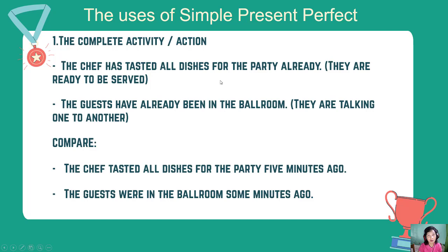Let's see the example: 'The chef has tasted all dishes for the party already.' 'Already' is the word that supports the meaning of the complete or finished activity. This sentence means that the action of tasting all dishes is finished — it was finished just some time before the present, or sometime before we are speaking. The most important thing is that there is a result, a relation to the present. That's why the name is simple present perfect: the dishes are ready to be served. Compare this to simple past: 'The chef tasted all dishes for the party five minutes ago' — here we focus on the time.